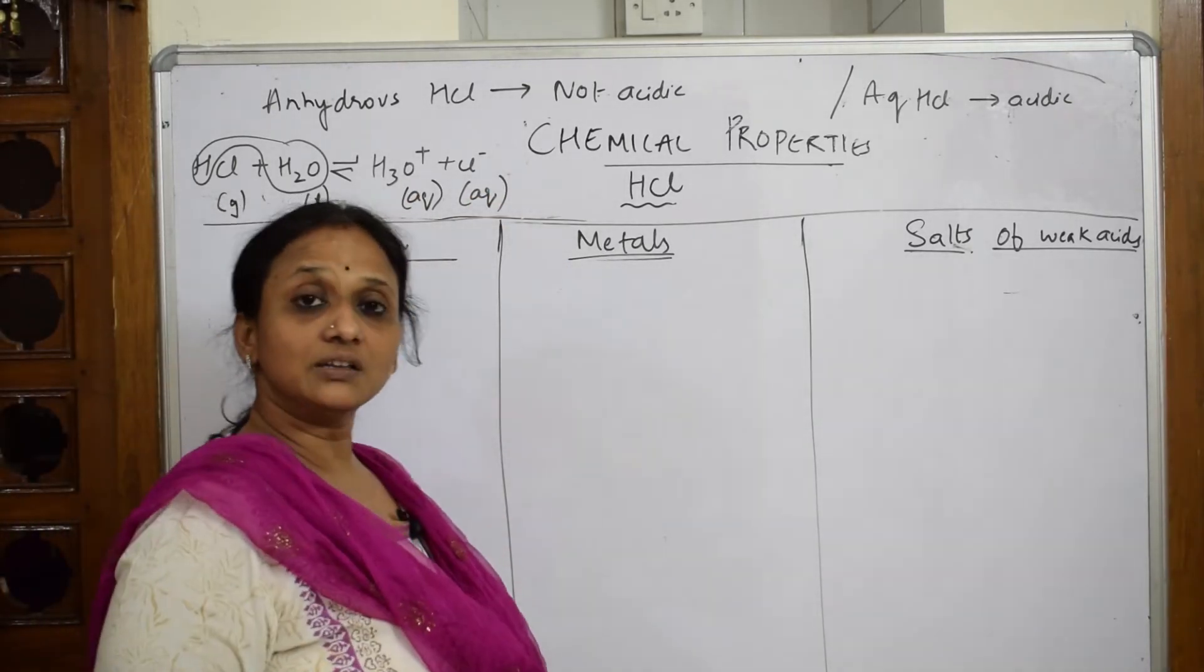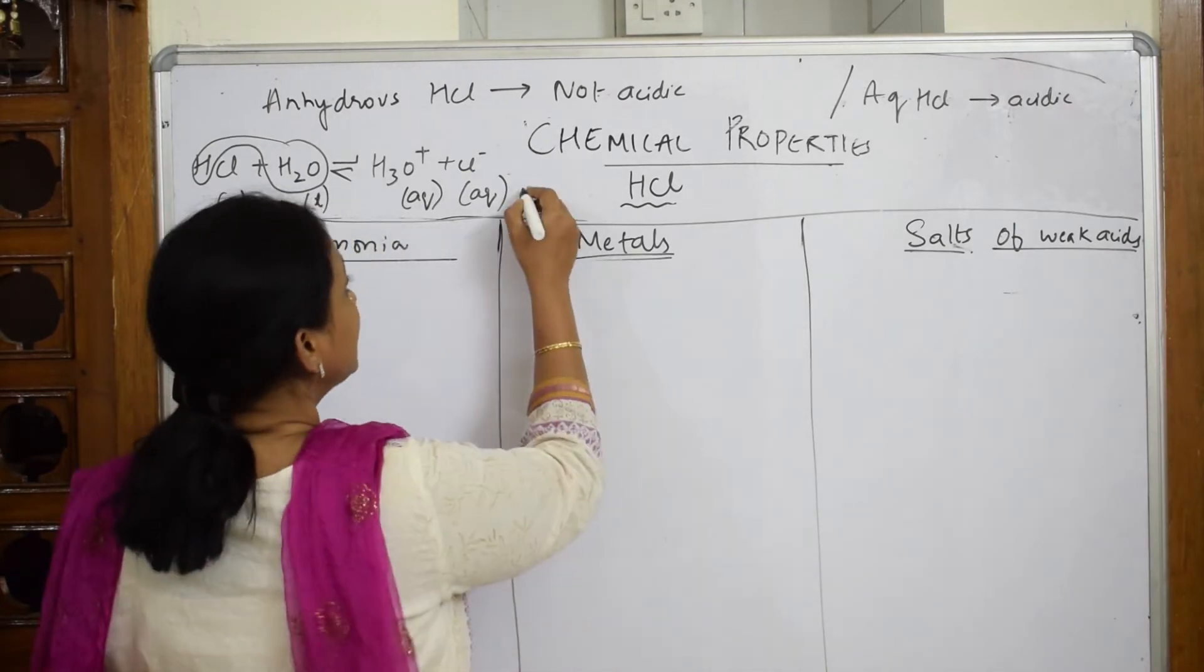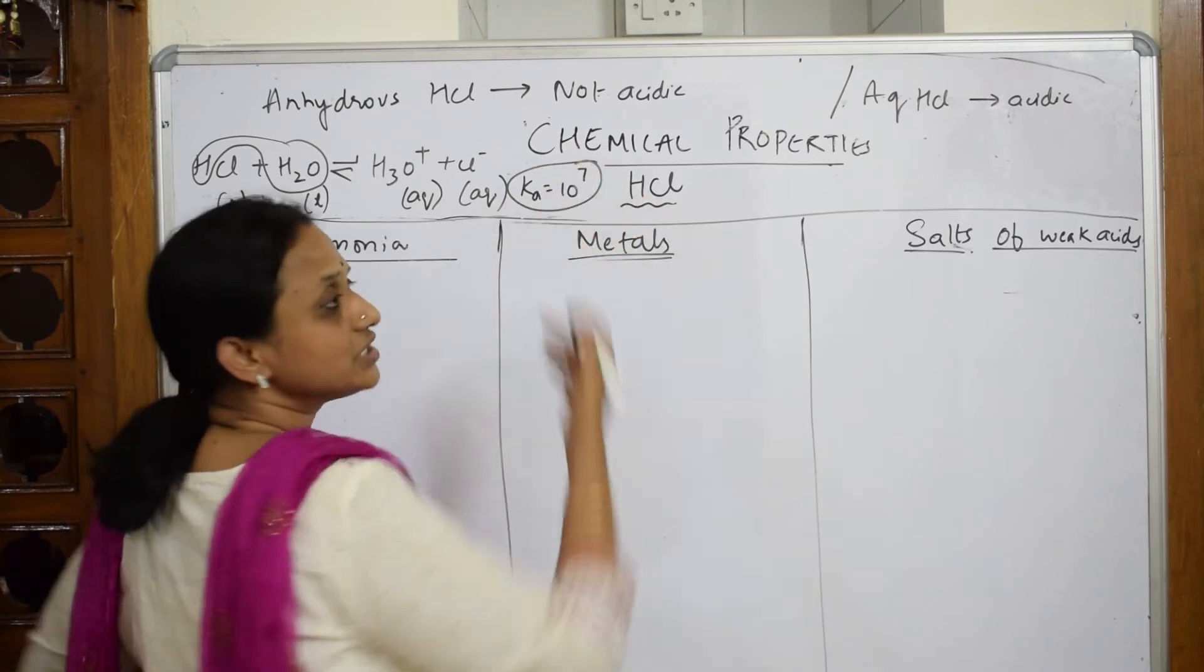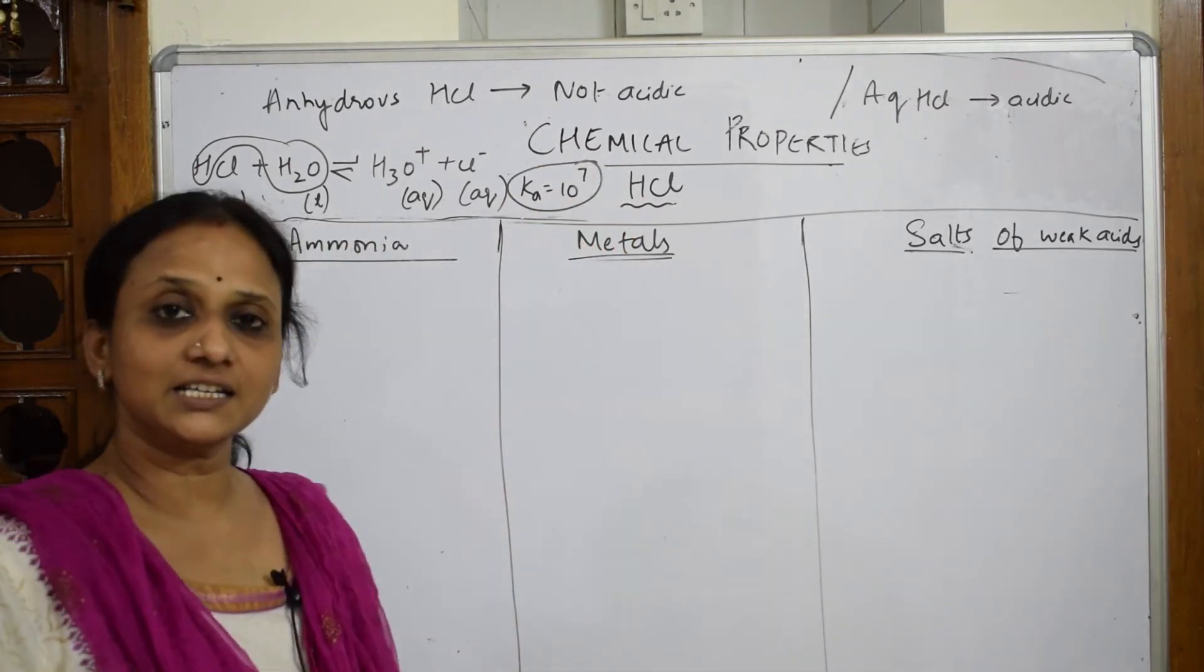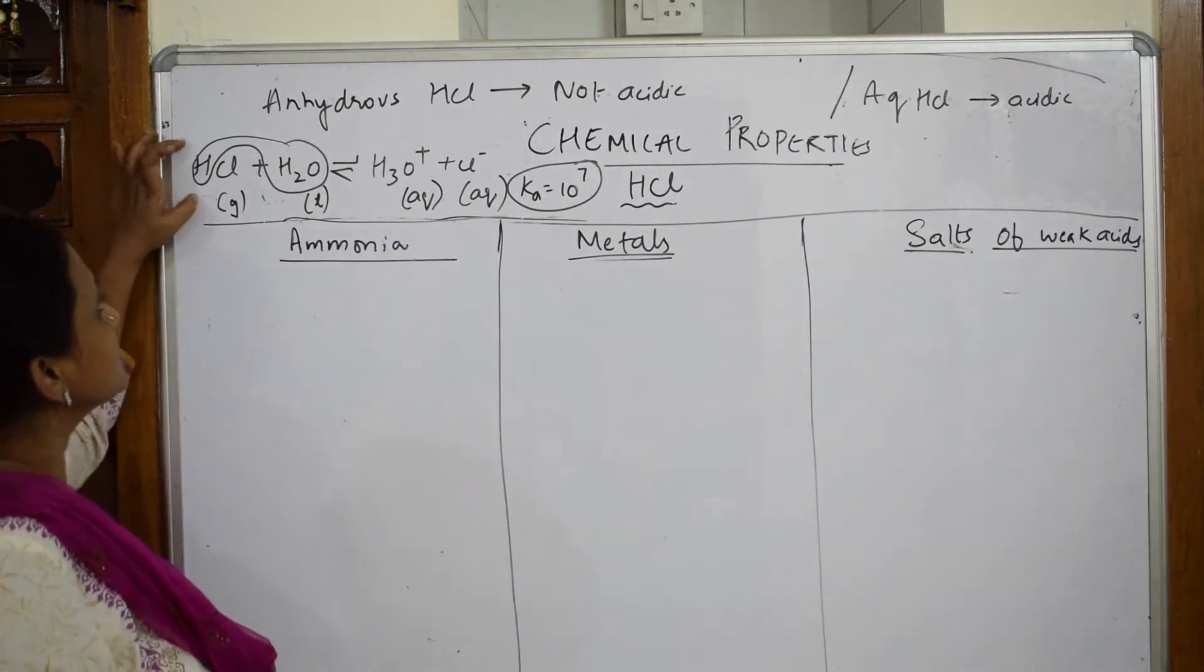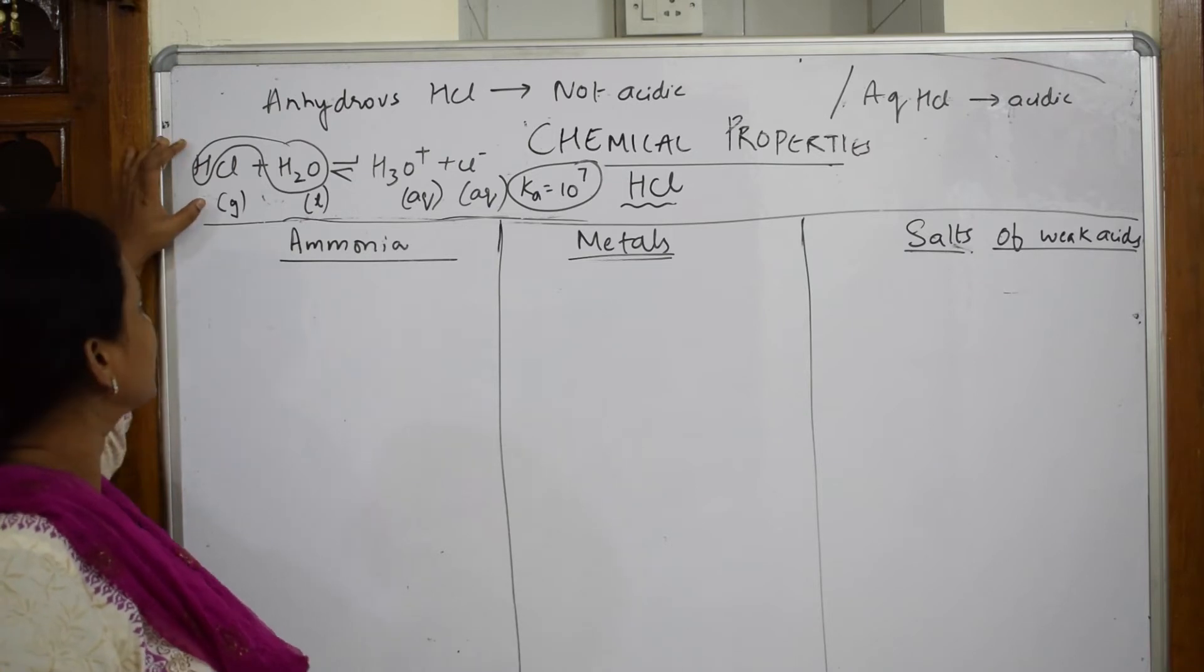What is Ka value? The acid dissociation constant Ka value is equal to 10 to the plus 7. This Ka value indicates that it is highly acidic in nature. When should you learn this? When they ask you to explain acidic nature of HCl.